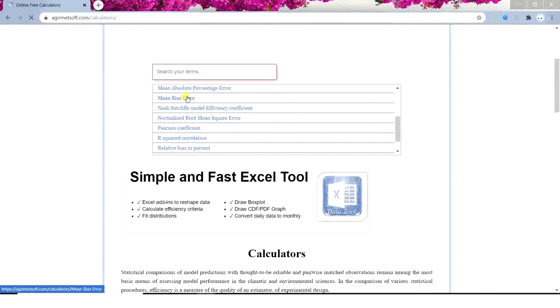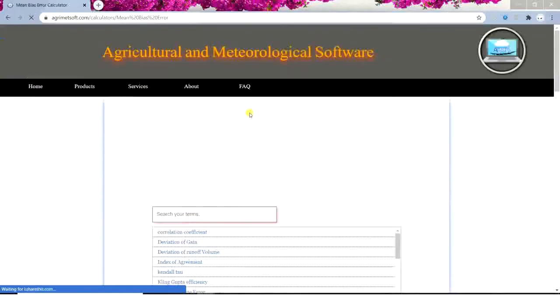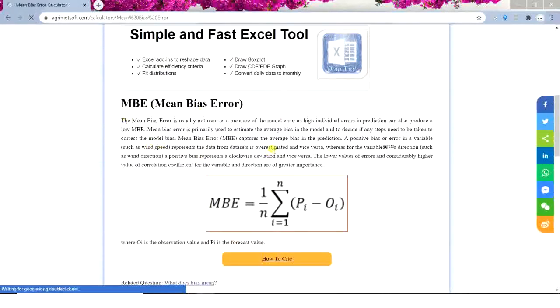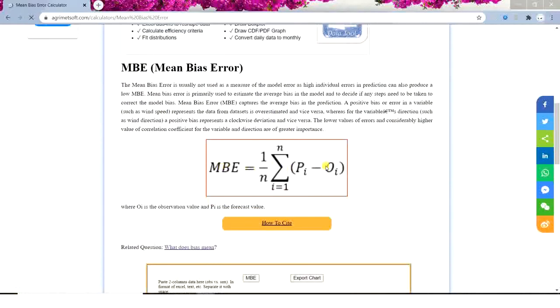So here this is the formula. As you can see, the Mean Bias Error is used to estimate the average bias in the model and see if your model needs some modifications or not. So this measurement can tell you how much bias you have in your model and what is the direction.